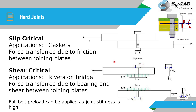In shear critical joints, the cylindrical surface or shank of the bolt takes the load and slip is allowed. Applications include rivets on bridges. Force is transferred due to bearing and shear between joining plates. Full bolt preload can be applied as joint stiffness is high in the case of a hard joint.